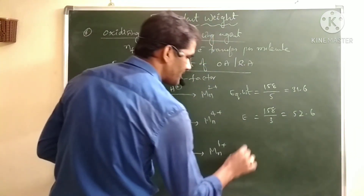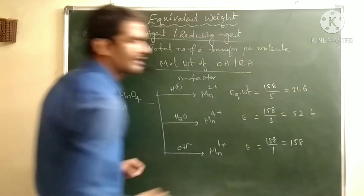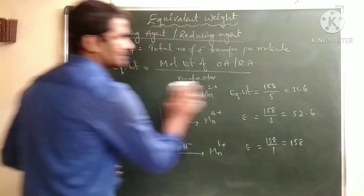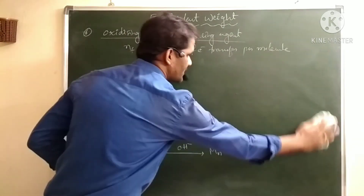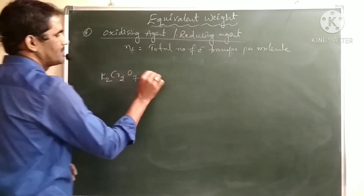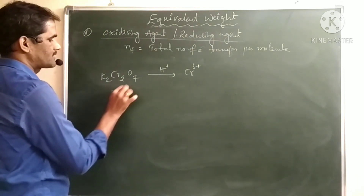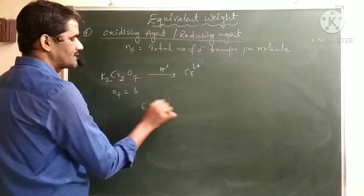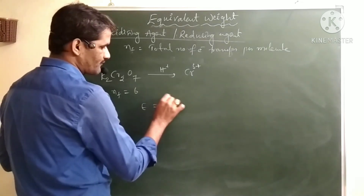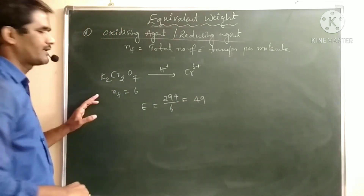In alkaline medium, the equivalent weight of KMnO₄ is 158 divided by 1, which equals 158. Next, potassium dichromate (K₂Cr₂O₇) is also an important oxidizing agent. In acidic medium it is converted to Cr³⁺. The n-factor for potassium dichromate is 6, and its molecular weight is 294. So 294 divided by 6 gives equivalent weight 49.